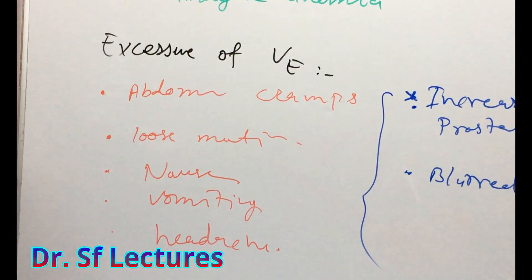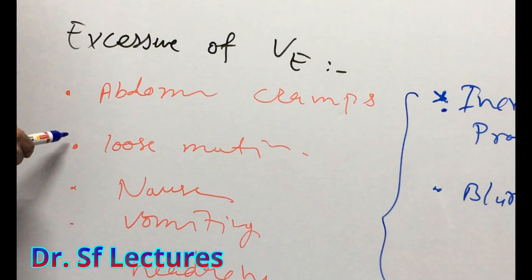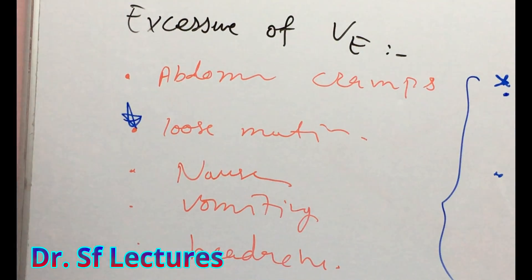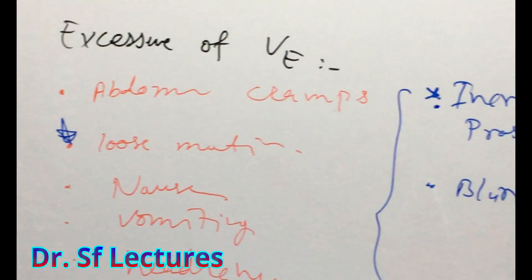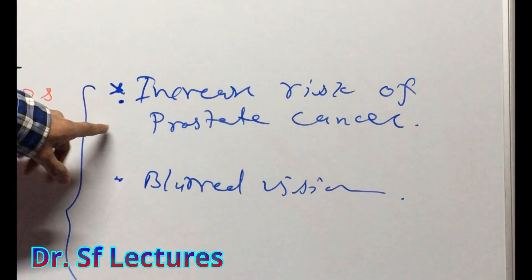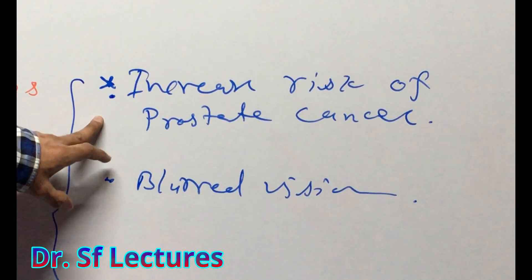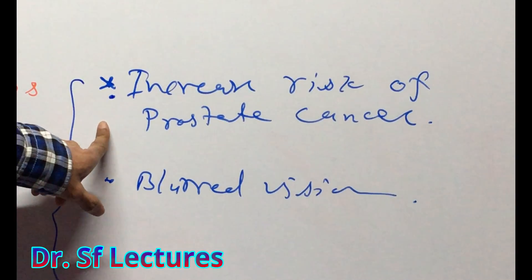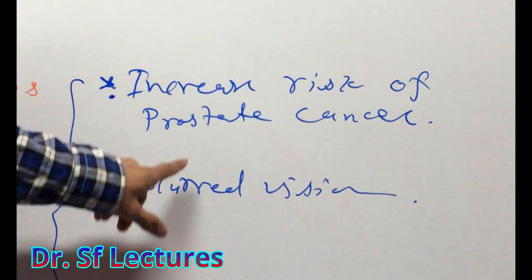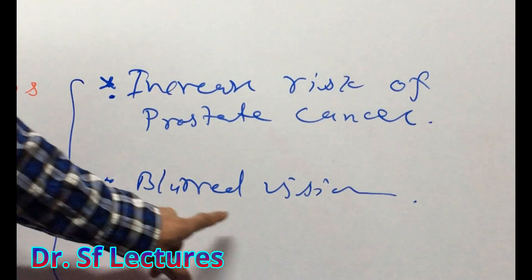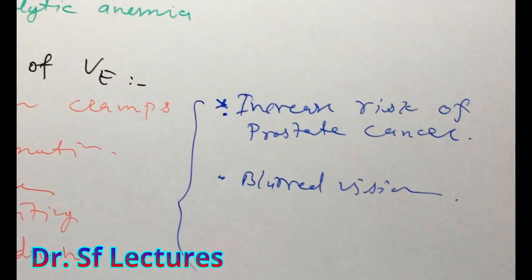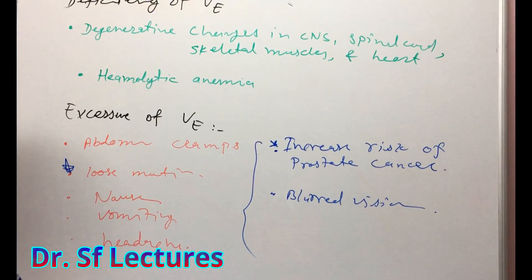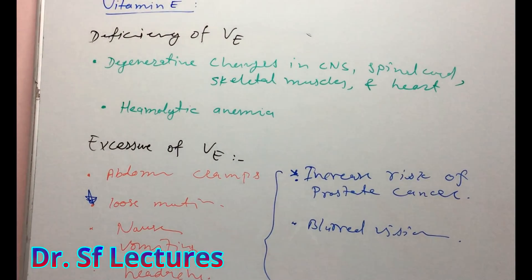Excessive Vitamin E can cause abdominal cramps, loose motion, nausea, vomiting, and headache generally. One more important effect of excessive Vitamin E is increased risk of prostate cancer and skin cancer, as well as elevated blood pressure. So these are the fat-soluble vitamins.